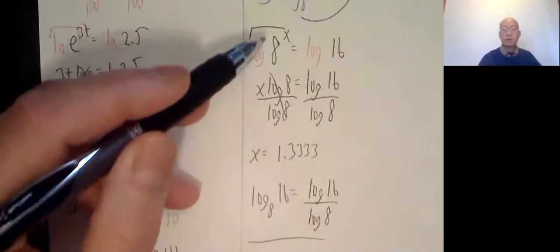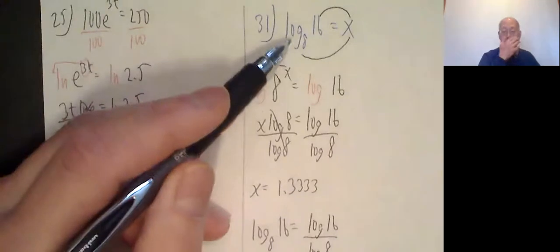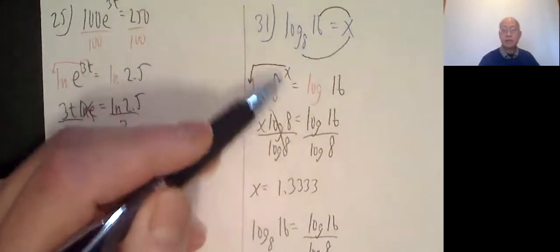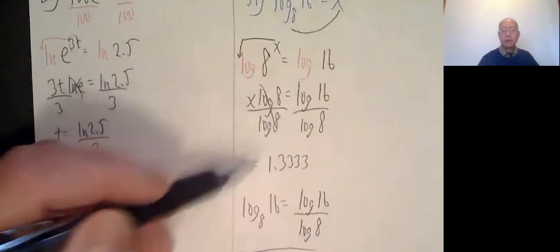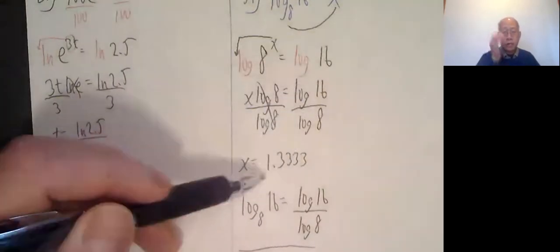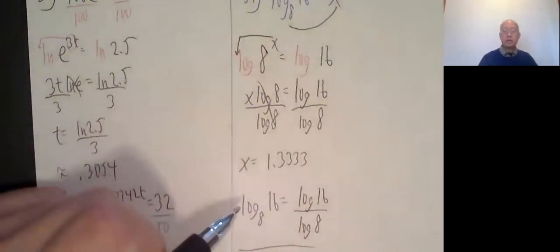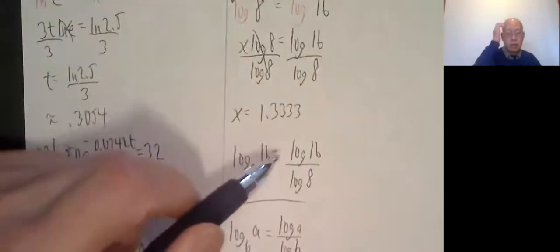So I believe we were in the process of doing this when my video cut out. Let me finish this, back to 31 just in case. Log base 8 of 16 equals x, 8 to the x equals 16, log both sides, x log 8 equals log 16, divide by log 8. Punch it in the machine, log 16 divided by log 8, 1.3333. Key thing to notice is log base 8 of 16 came out to be log 16 over log 8.